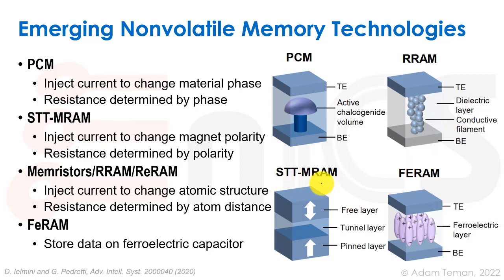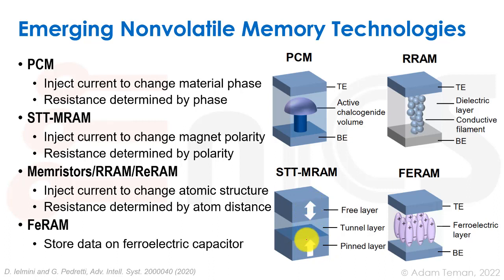STT-MRAM (spin-transfer torque magnetic RAM) uses ferromagnetic materials with spin. A fixed 'pin layer' has electrons all aligned in one spin direction, and a 'free layer' can have its electron spin flipped by driving current through the device. The relative alignment of pin and free layer sets the device resistance, encoding a 1 or 0. STT-MRAM is more robust as the material itself is not changed, and reads tend to be faster. However, multi-level storage and 3D stacking are more difficult.